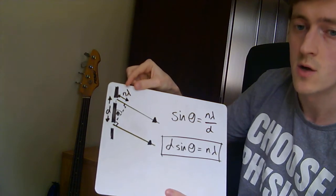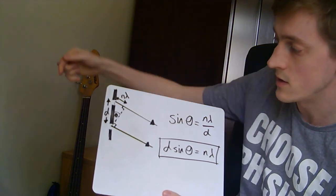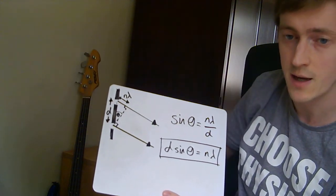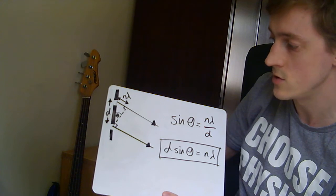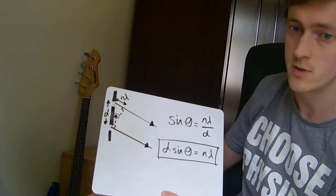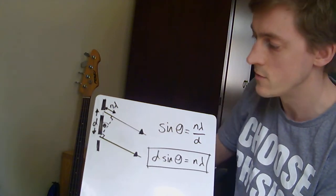And this value of d here, that's just the size of the gap between those two slits. Remember, it's the diffraction grating. We've got loads and loads of slits. We were only really interested in two of them, because the same logic will apply no matter how many slits you've got.